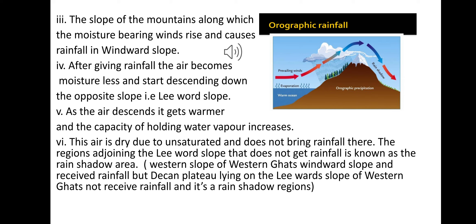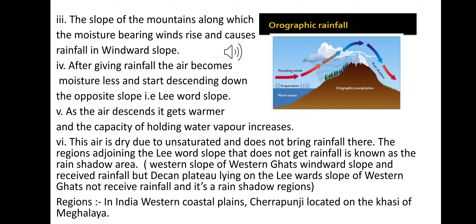For example, the western slope of the Western Ghats is a windward slope and receives rainfall. But the Deccan Plateau, lying on the leeward slope of the Western Ghats, does not receive rainfall and is its rain shadow region. Orographic rainfall also happens in the western coastal plain and Cherrapunji, located on the Khasi Hills.